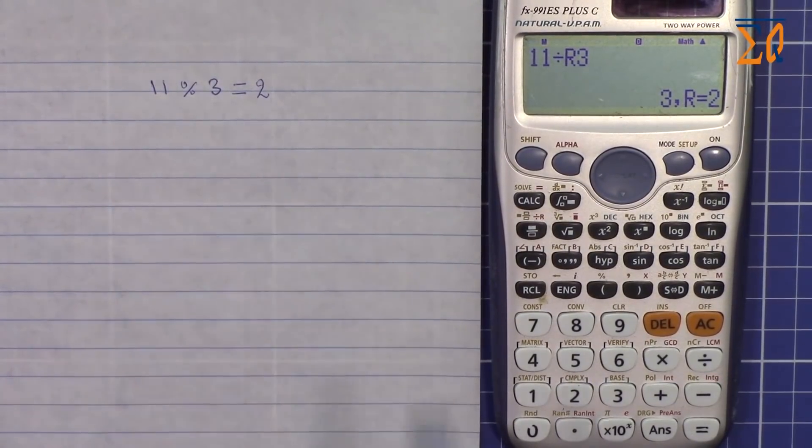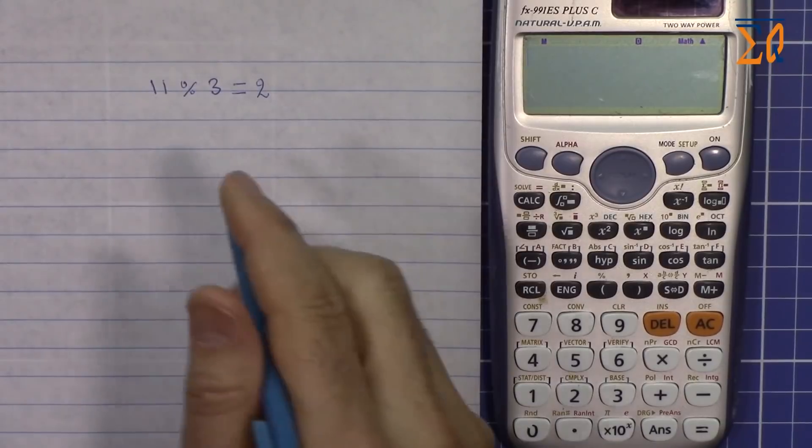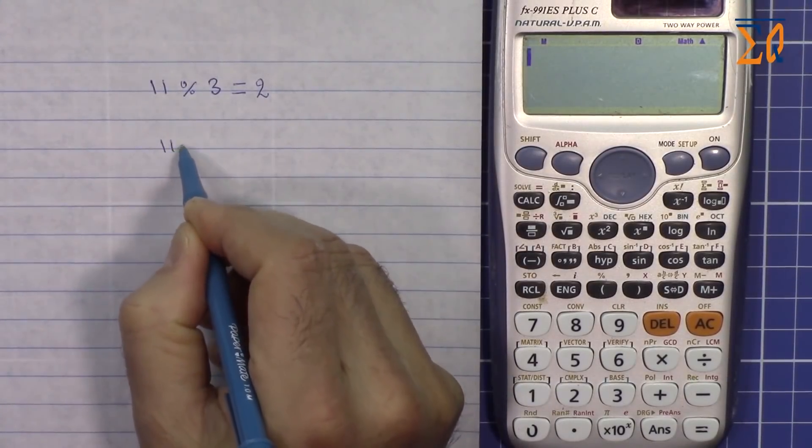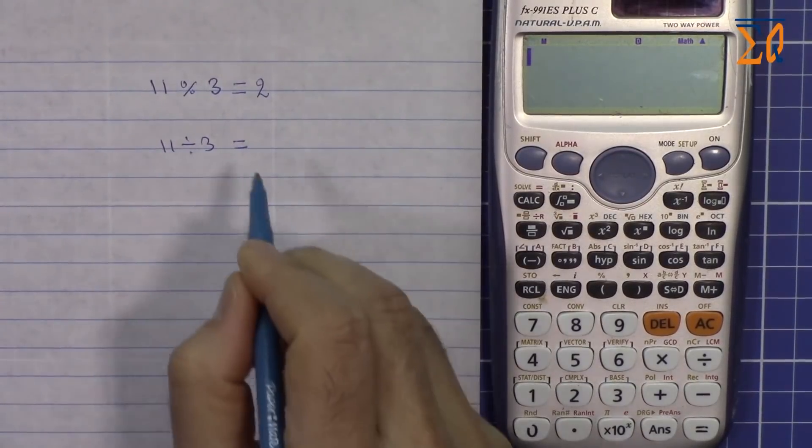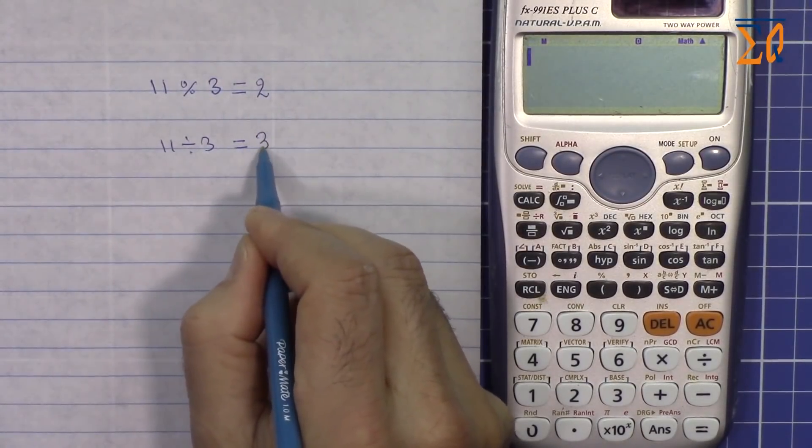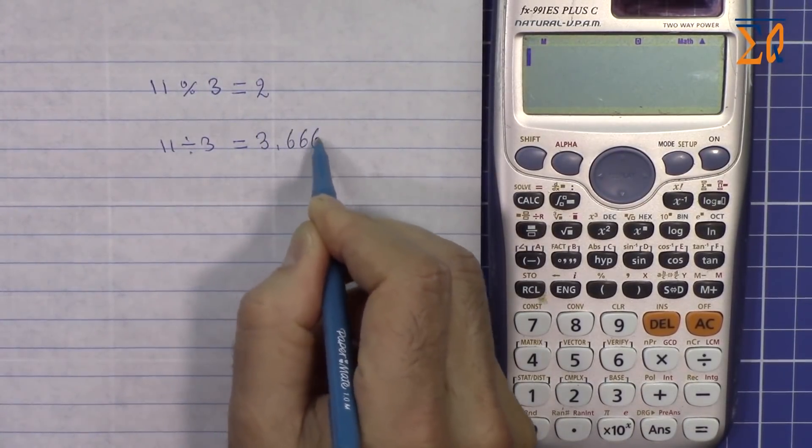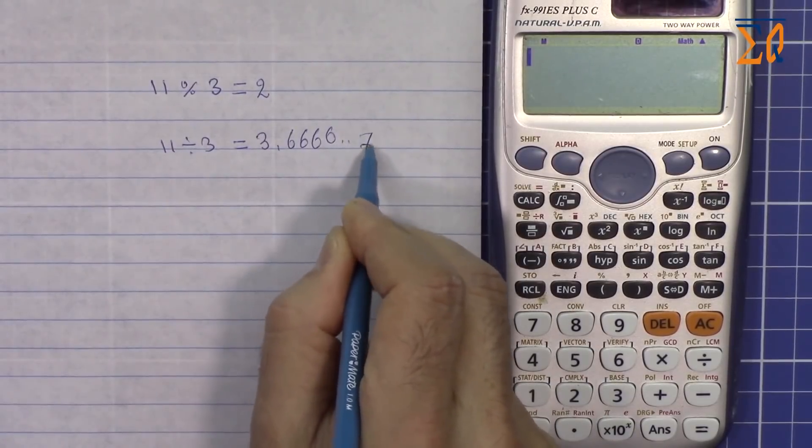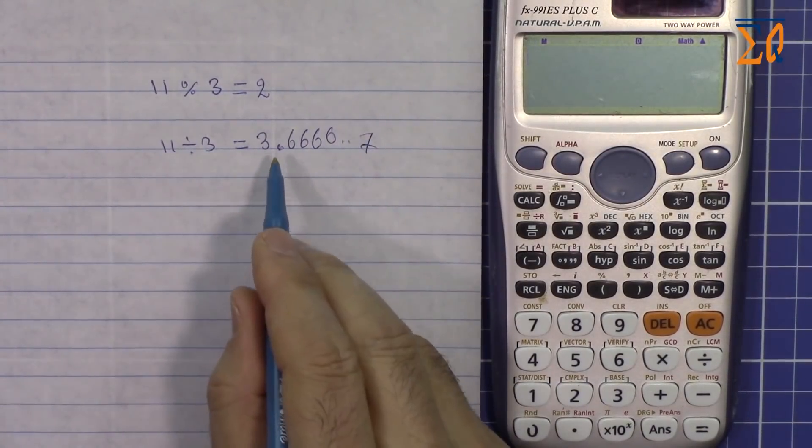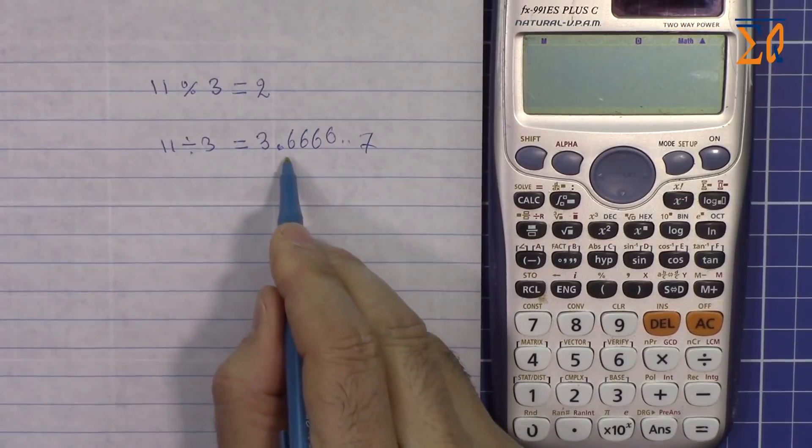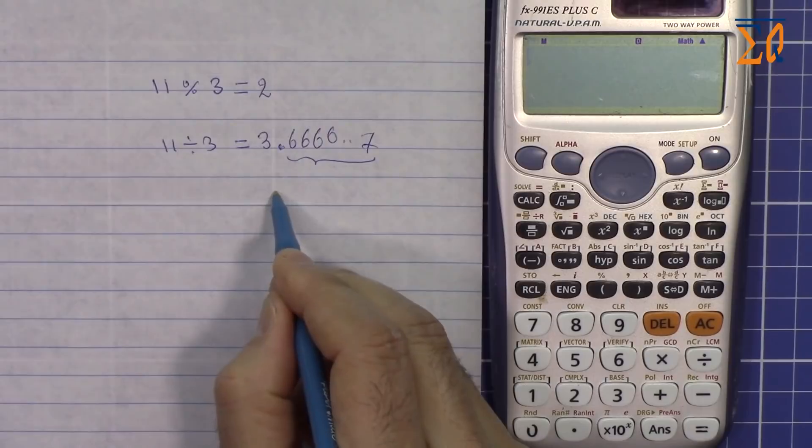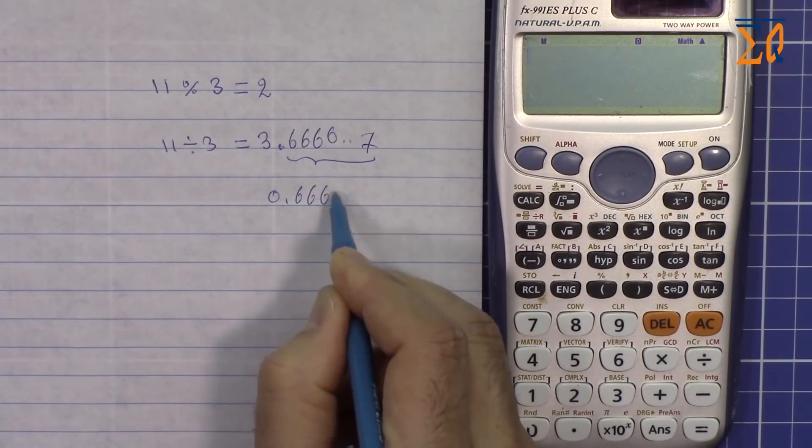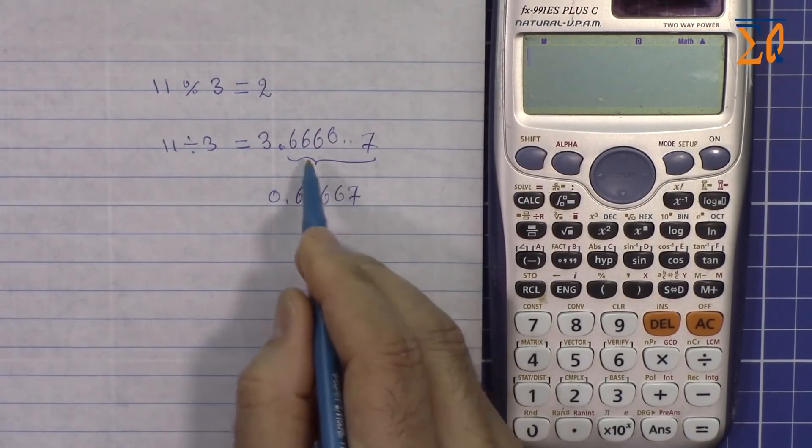How can we do this with pen if you're interested? 11 divided by 3, if we get a whole number we have 3.66667. To get the 2, just get this part which is 0.66667.